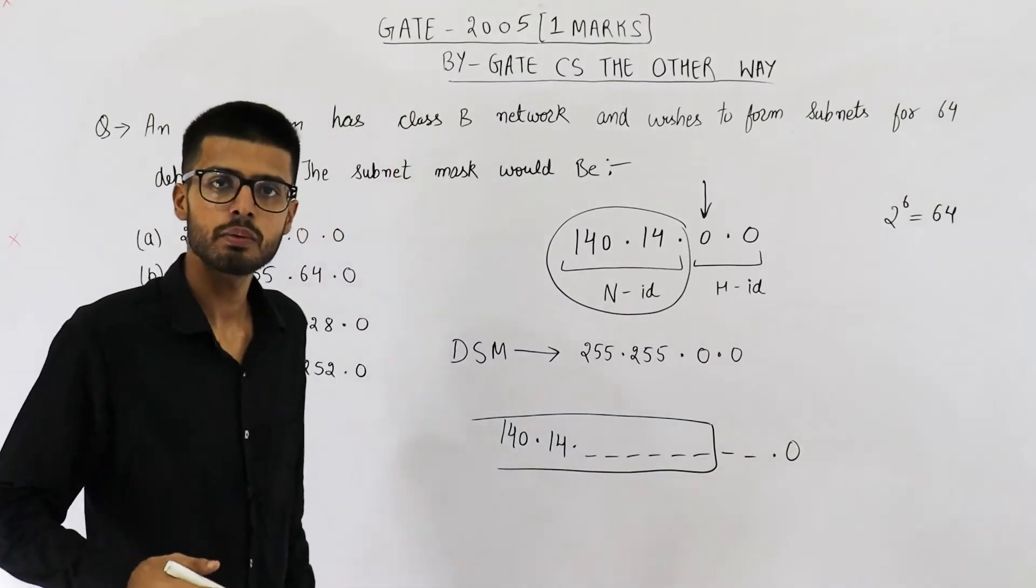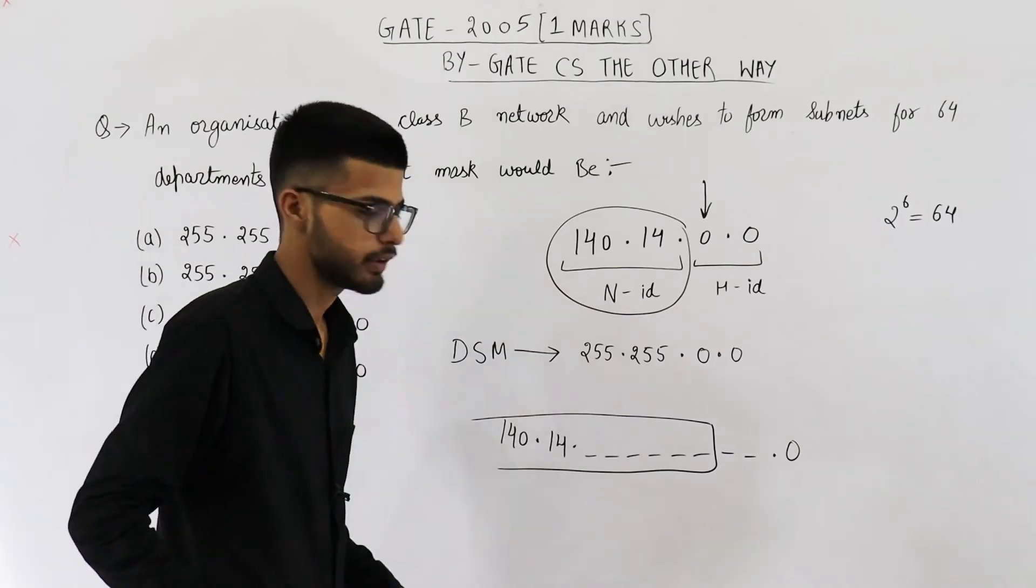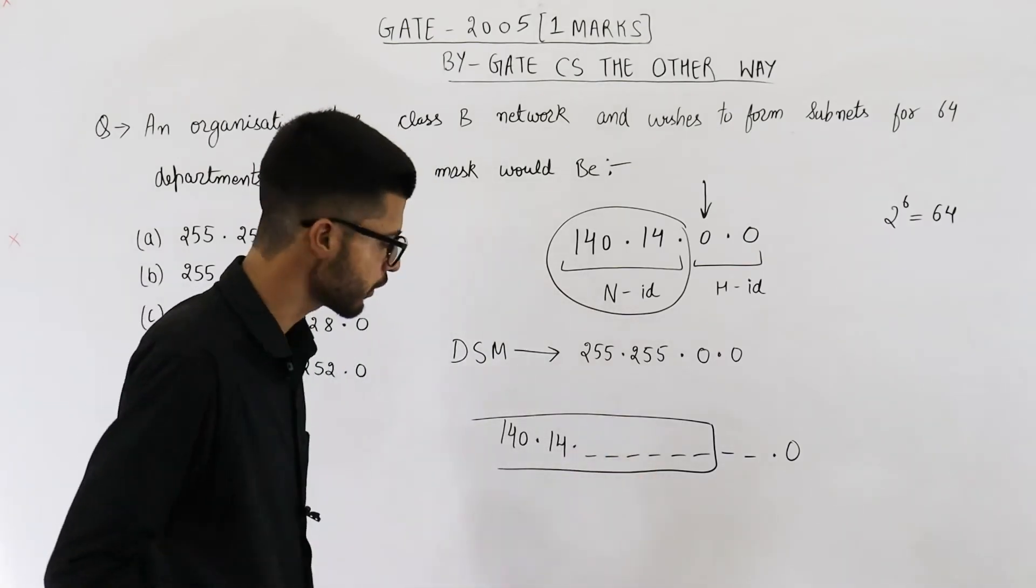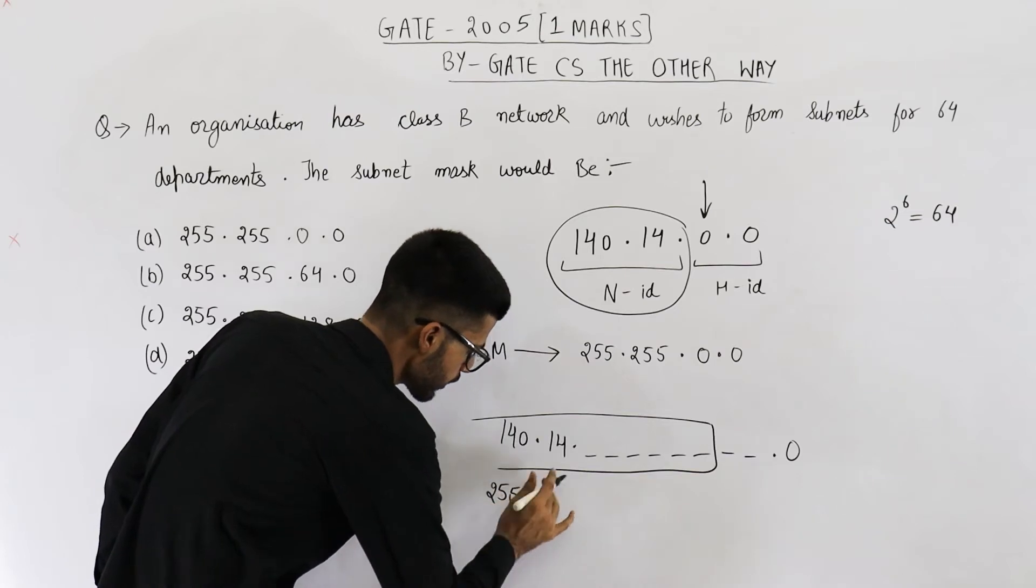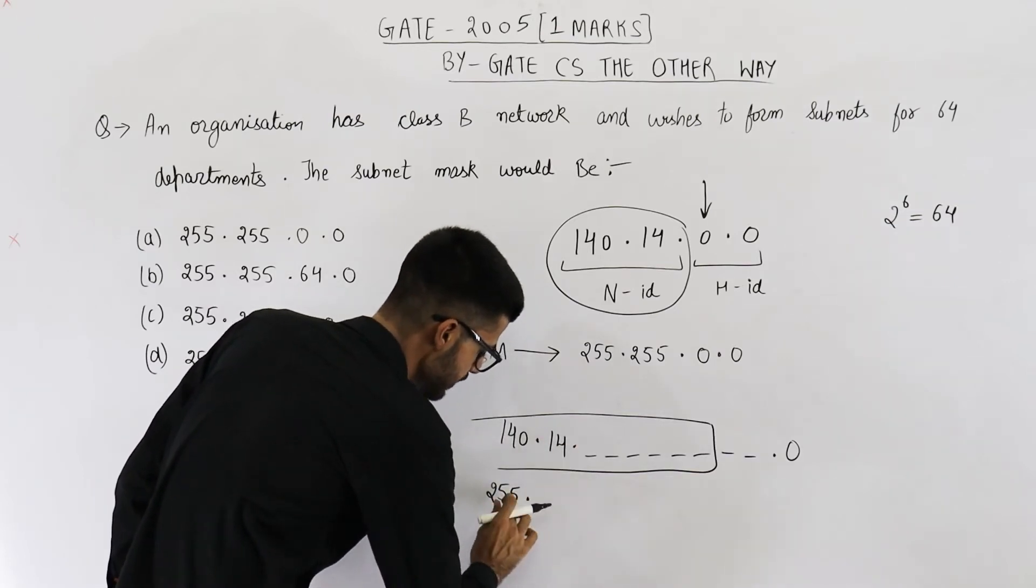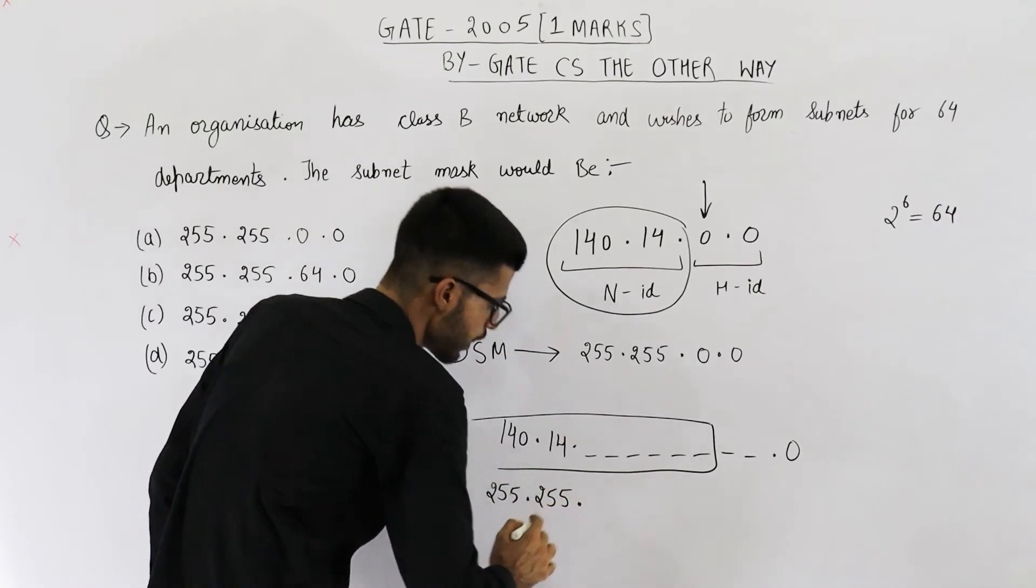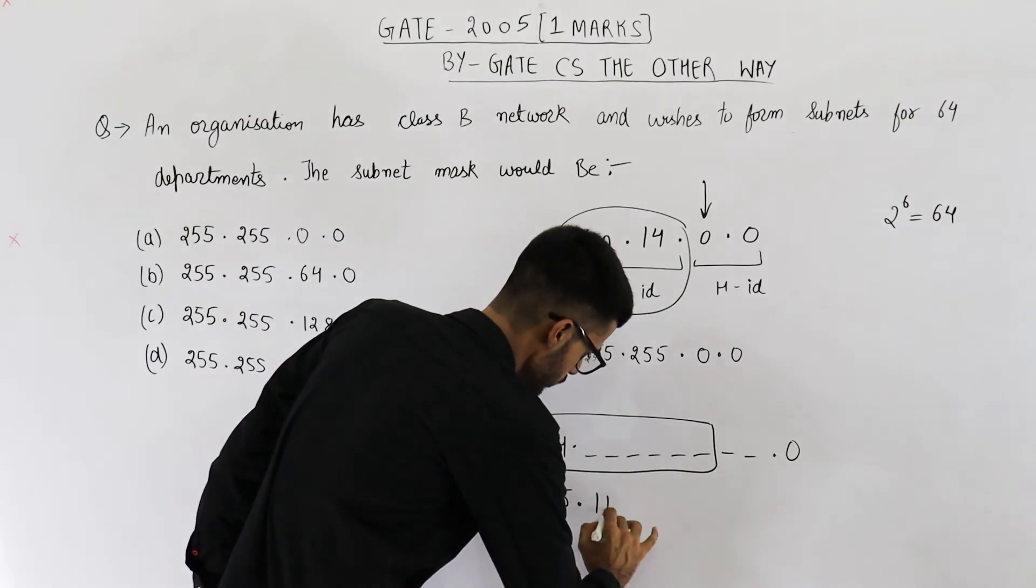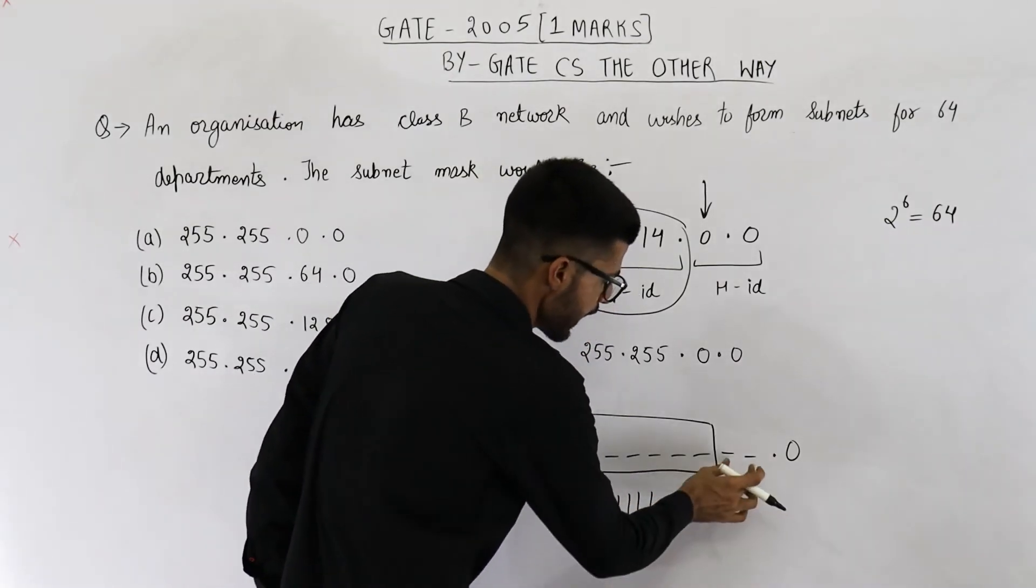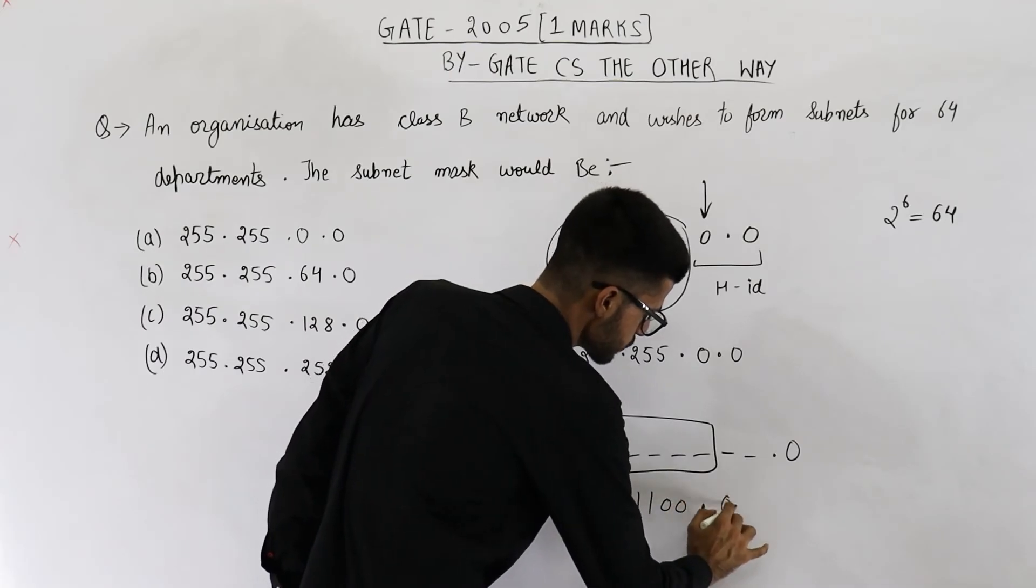Now let us find what will be the new subnet mask. Because this much is the network ID, we have to place 1s for all of these bits. So 8 1s means 255. Again 8 1s means 255. Now we have 6 bits of 1s: 1, 2, 3, 4, 5, 6 and 2 0s, followed by all 0s.